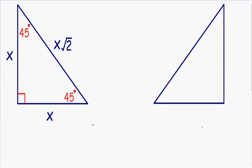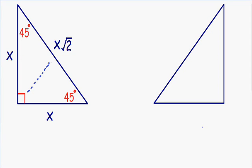Welcome to my second special right triangle video. In this one we are going to go over a 45-45-90 triangle. Just like a 30-60-90 triangle, the reason why this 45-45-90 triangle is special is because the length of the longer side is proportional to the length of the shorter sides. If the shorter sides have a length of x, then in a 45-45-90 triangle the hypotenuse — the side opposite the 90-degree angle — has a length of x multiplied by the square root of 2.